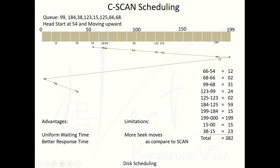One limitation still remaining to be overcome is the overhead from 184 to 199 and back — we are wasting some seek time both in SCAN and in C-SCAN. This will be addressed in the upcoming LOOK scheduling video. Please wait for that video. If you haven't subscribed yet, please subscribe. Thanks for watching Devrat Knowledge Villa.